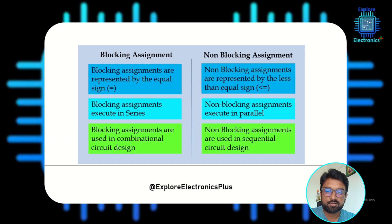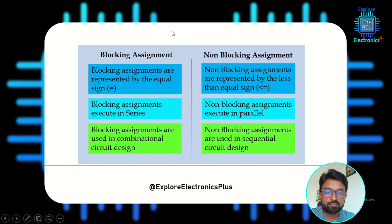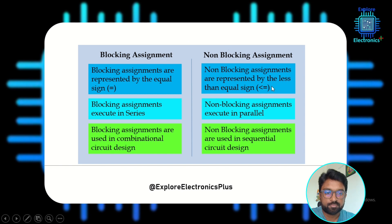The main difference is in the operator used. Blocking assignments are represented with the equal operator, and non-blocking assignments are represented with the less-than-equal operator. So if you write y = a + b, that equal operator means you are using a blocking assignment. If you write y <= a + b, then it is a non-blocking assignment.